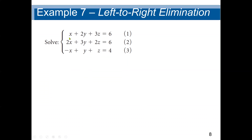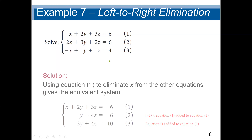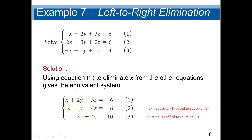Let's look at another example. We have X plus 2Y plus 3Z equal to 6, 2X plus 3Y plus 2Z equal to 6, and negative X plus Y plus Z equal to 4. Using equation 1 to eliminate X from the other equations. We don't need to interchange the rows here because the coefficient of X is already 1.